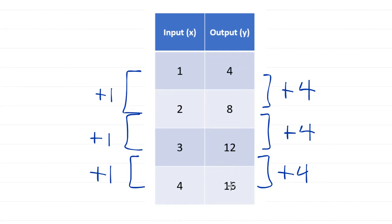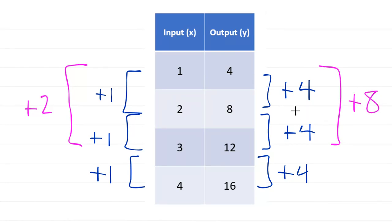It doesn't have to just be an increase of 1; this rate of change is proportional. If I go from x equals 1 to x equals 3, the change in input is plus 2. The corresponding output goes from 4 to 12, which is plus 8. If I take 4 divided by 1, that's 4, and 8 divided by 2 is also 4 — it's proportional. I could increase x by 2, and if y increases by 8, that's still linear.